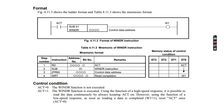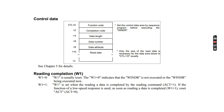We will simply see the format. The Read function is defined to read data from CNC to FANUC PLC. Sub 51 Window Read will be used. W1 will be the output we define to start this function. The control format requires us to define the function code, completion code, data length, data number, data attribute, and read data.